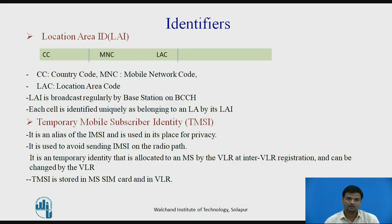The last identifier is the Temporary Mobile Subscriber Identity (TMSI). It can be assigned by the VLR responsible for the current location of a subscriber. The TMSI has only local significance in the area handled by the VLR. It is stored on the network side only in the VLR and is not passed to the Home Location Register (HLR).